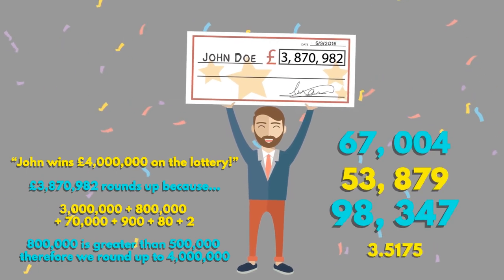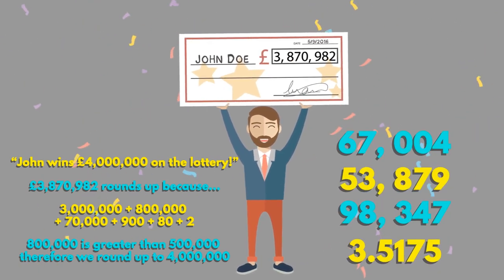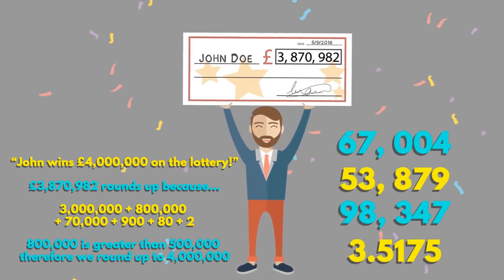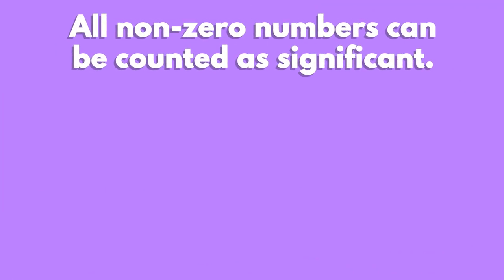What is the most significant figure in each of the following numbers, and what would they become if we rounded them to one significant figure? All non-zero numbers can be counted as significant. For the number 0.53, the 5 is the most significant digit as this is the one that tells us most about its value. If we were to round it to one significant figure, this would become 0.5.